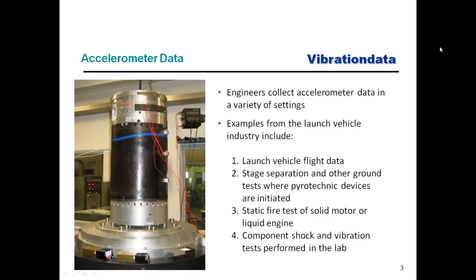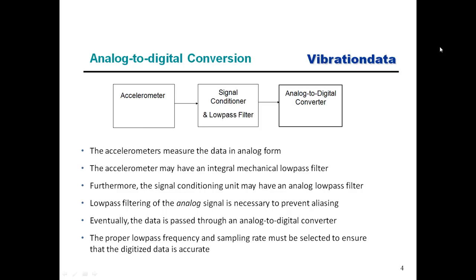Let's talk about analog-to-digital conversion. An accelerometer produces an analog signal, which gets passed through a signal conditioner. Ideally, there should be an analog low-pass filter in place, set to the appropriate type and cutoff frequency. The output analog data is then sent to an analog-to-digital converter. Nowadays, data acquisition systems commonly have built-in signal conditioners and analog low-pass filters as well. The analog low-pass filtering is needed to prevent aliasing.